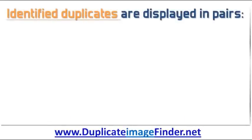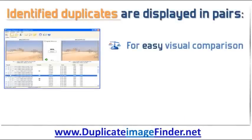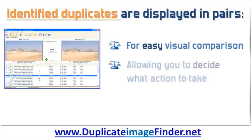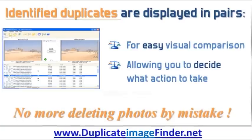Images that match can be displayed in more than one way. One way that they can be shown is with identified duplicates being shown in pairs for easy visual comparison before you decide what action to take. This prevents photos being deleted by mistake.